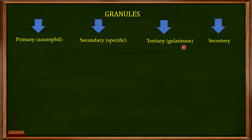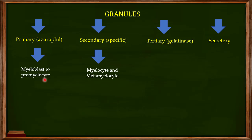These granules are produced at different stages of neutrophil differentiation. The primary granules are produced when neutrophils move from the myeloblast to the promyelocyte stage. The secondary granules are produced when neutrophils move from the myelocyte to the metamyelocyte stage. Tertiary granules are produced in the band cell stage, and secretory granules are produced when neutrophils are in their mature stage.